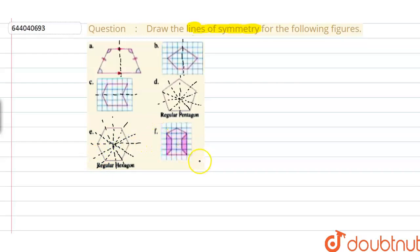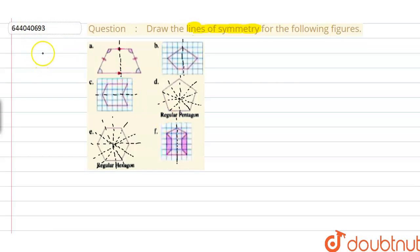Now let us talk about this last figure. In this figure, this line is acting as a line of symmetry because it is dividing this figure into equal halves. So this is the way in which we can find the lines of symmetry for a given figure.